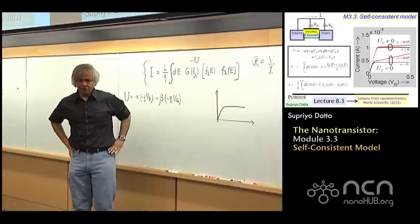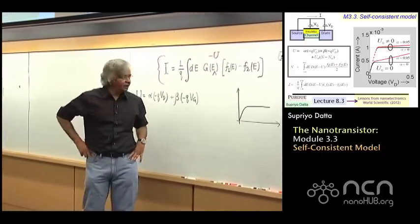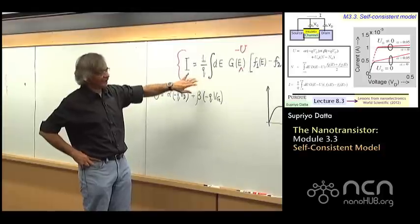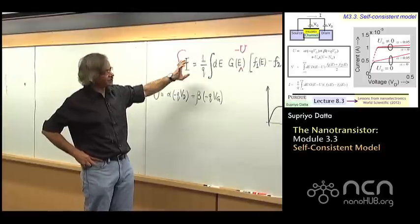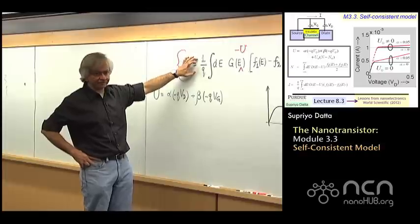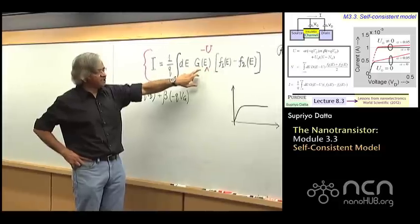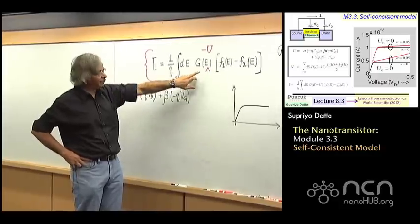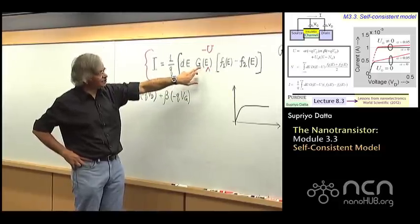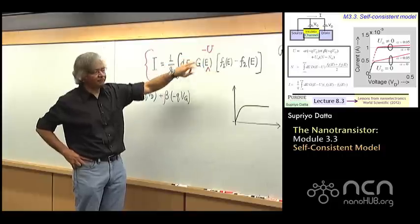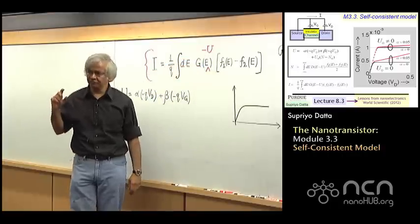Welcome to Module 3 of Week 3. If you remember in Module 2, we said that the current expression we've been using in the past, we wanted to change it by a little bit, namely this g of e, the conductance function. You shift it along energy by the amount of this channel potential.